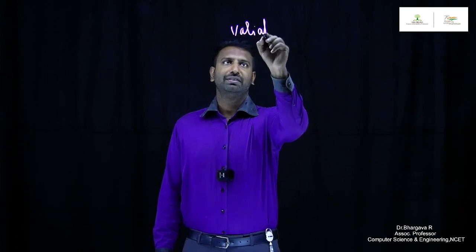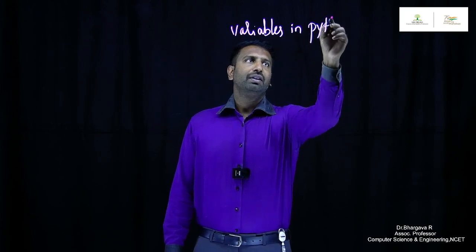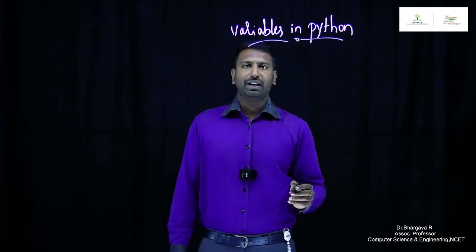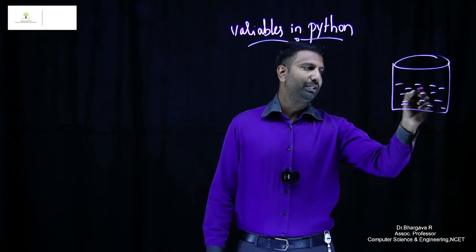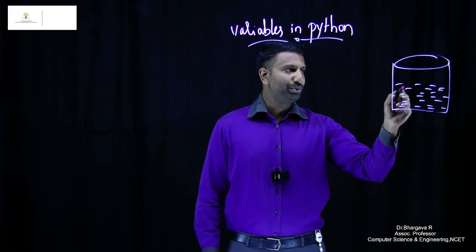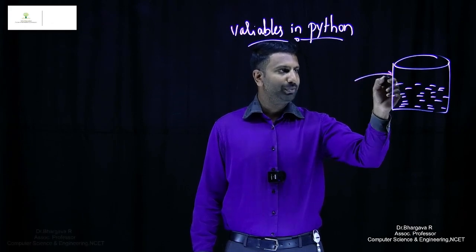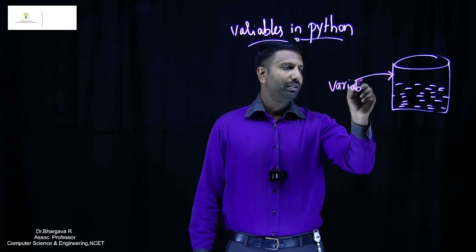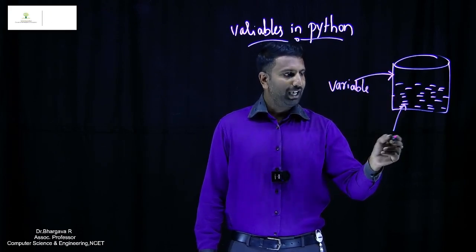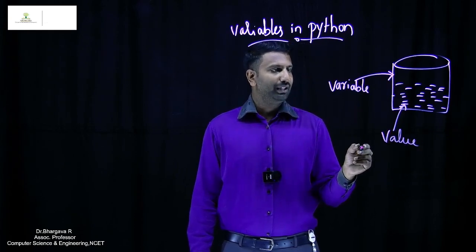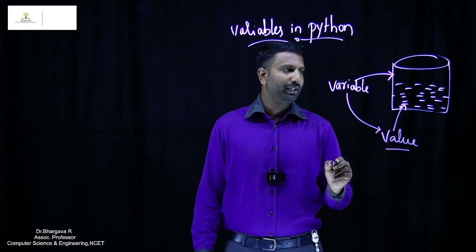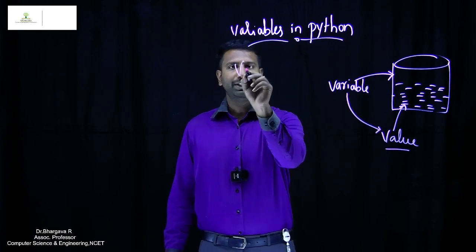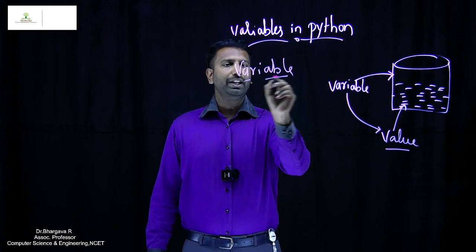Today we will be discussing variables in Python. To understand this, consider an analogy: suppose we have a glass of water. The glass is the place where the water is stored — that place can be called a variable, and the water stored in it can be considered the value. A variable is simply a name given to a place where a value is stored. The meaning of the word 'variable' is changeable.